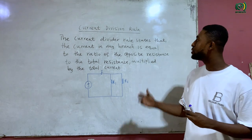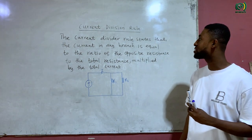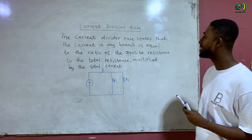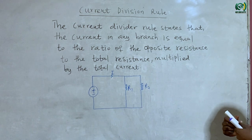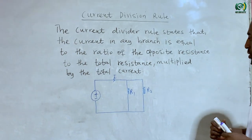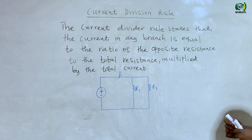This current division is mostly applied to power circuits and the rule states that the current in a branch is equal to the ratio of the opposite resistance to the total resistance multiplied by the total current.